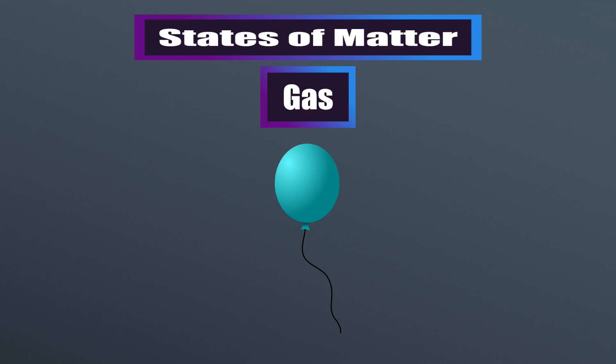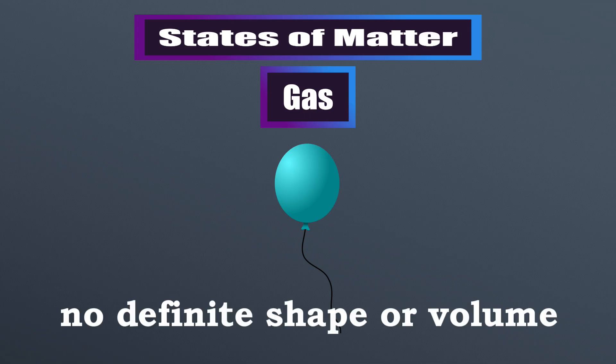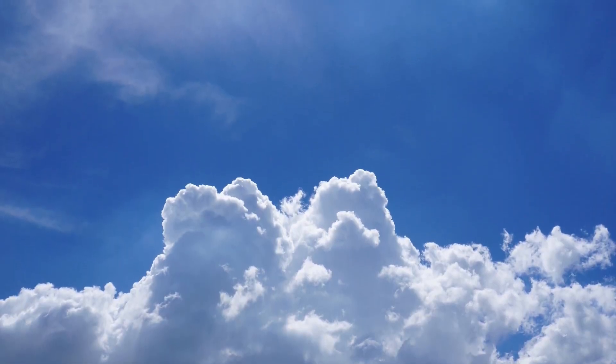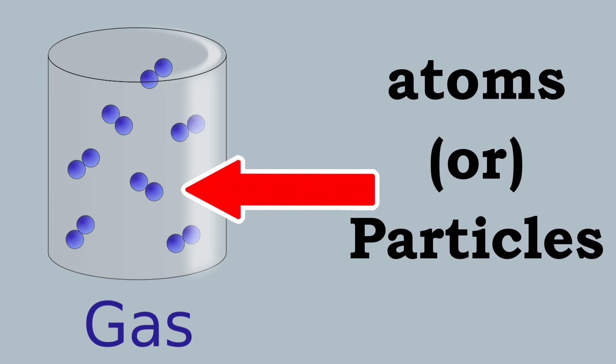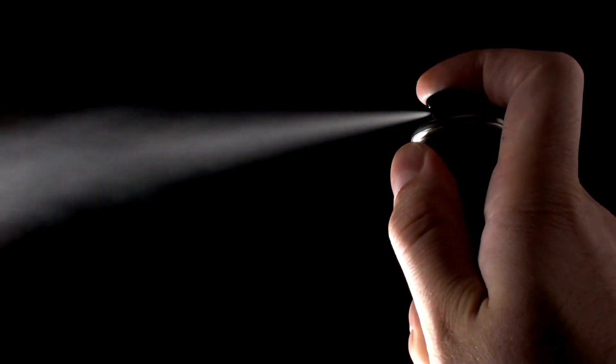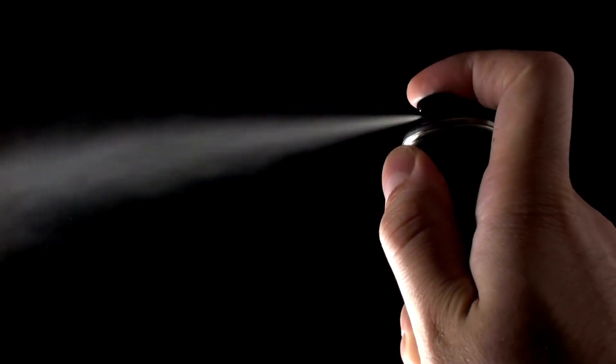Gases have no definite shape and no definite volume, meaning they will fill whatever space they're in, but they don't have a specific amount. This is because gas particles are very far apart from each other, which means they're always flying around everywhere, and because of this, their bonds are also weak. However, it's because of these properties that gases also have the ability to be compressed — taking that wide space between gas particles and forcefully shortening it, basically putting a gas into a smaller space.